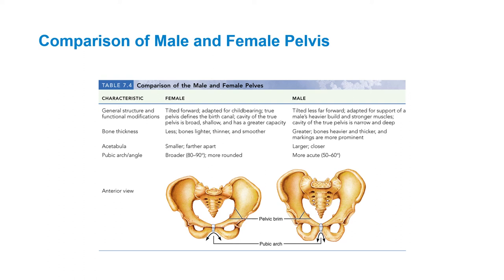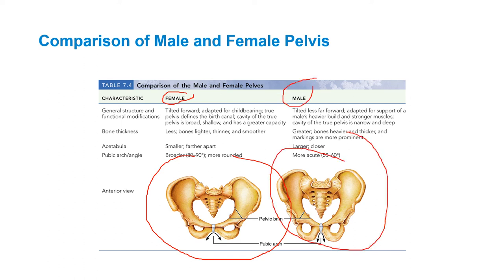In this image right now, we're looking at a comparison of a male versus a female pelvis. This is the image of the female, and this one is the image of the male over here. You can see right away that the male pelvis is taller and more narrow, while the female is shorter and wider. The pelvic brim here is much wider.